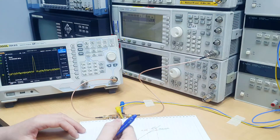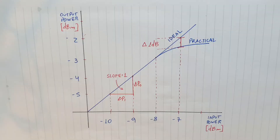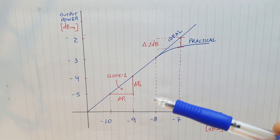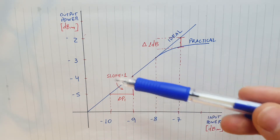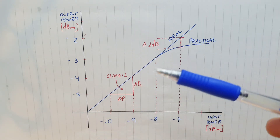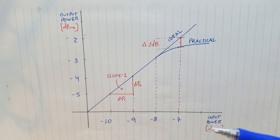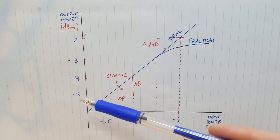First, let's try to understand what the 1dB compression point is. When we deal with an amplifier and plot the gain characteristics on a dB scale — dB input power versus dB output power — the transfer characteristics will have a slope of 1. For example, with a gain of 5dB, at -10dB input power we get -5dB output power.